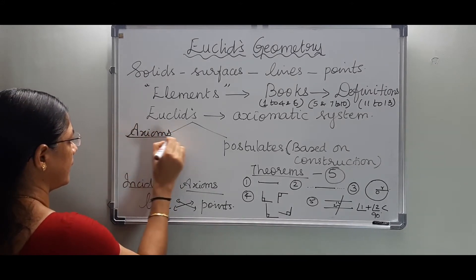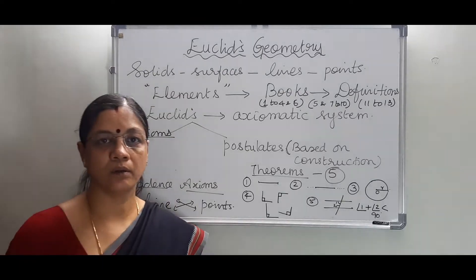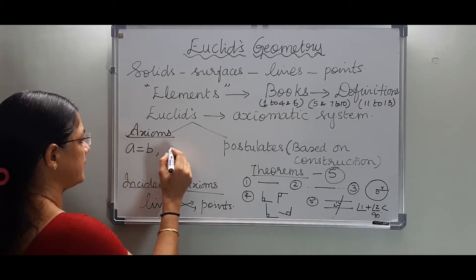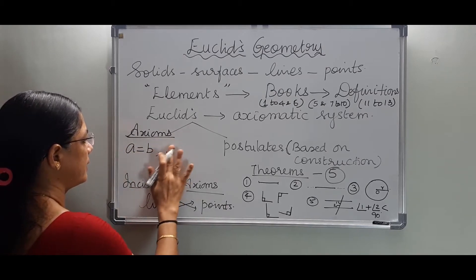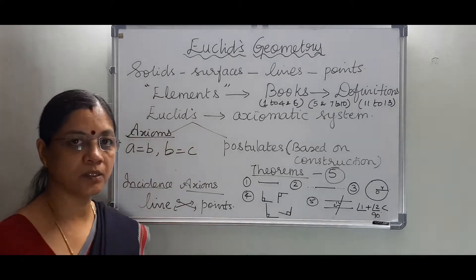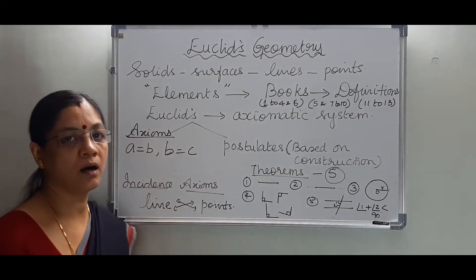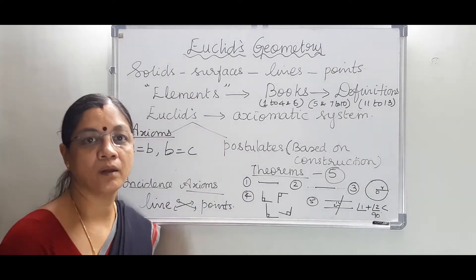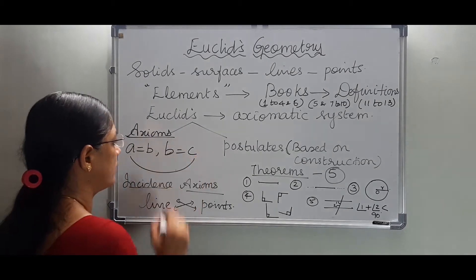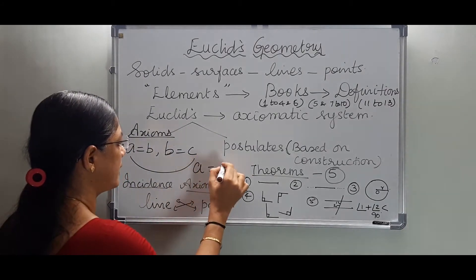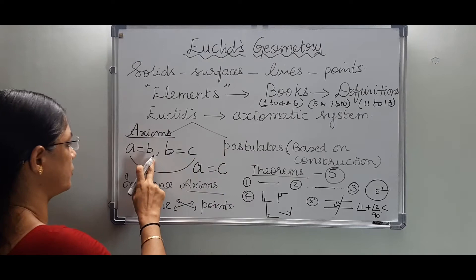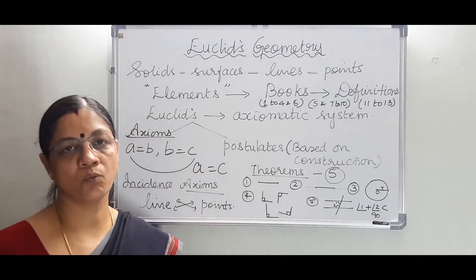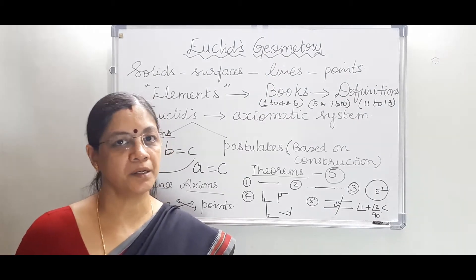Let me explain with an example. If A is equal to B, and B is equal to C — A and C are things equal to the same thing B — then those things are equal to one another. That is, A equals C. So if A = B and B = C, then A = C. This is what this axiom means, and it doesn't need any proof.